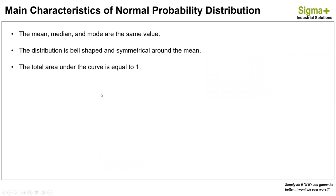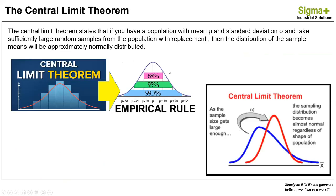The main characteristics of the normal probability distribution are that the mean, median, and mode have the same value; the distribution has a bell shape with a symmetrical shape around the mean; and the total area under the curve equals one. The central limit theorem states that if you have any population with a mean value mu and standard deviation, and you take sufficiently large random samples, the distribution of the sample means will be approximately normally distributed, and you can then implement the empirical rule.